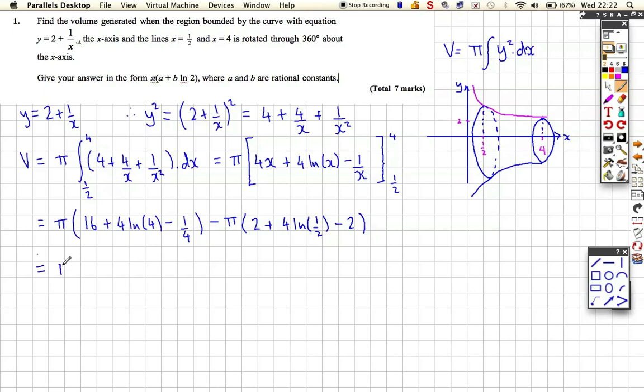And then let's go on to this line. So pi multiplied by, well 2 minus 2 are going to cancel each other out. So just the numbers we're going to get 16 minus 1 quarter which is 63 over 4. Then we're going to get plus 4 log 4 minus 4 log 1 half. And we want our expression in pi brackets a plus b log 2. So we've got the pi and we've got that a bit here, so if a is 63 over 4, we need to get this in terms of log 2.